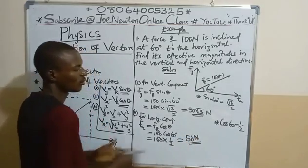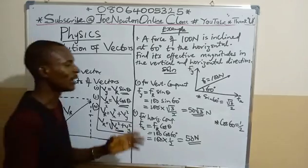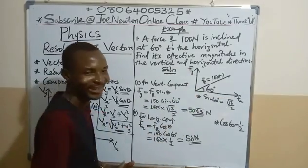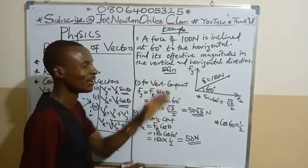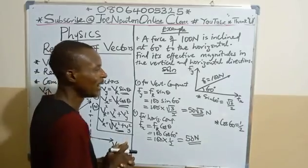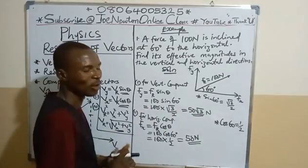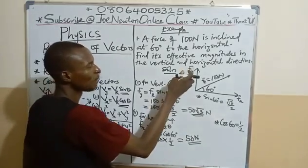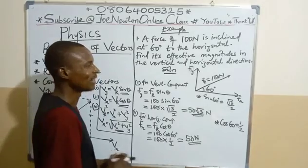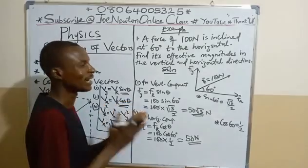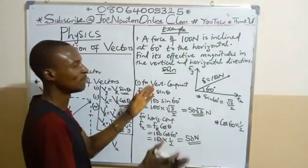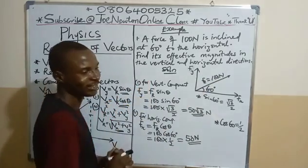The answer is simple. In vectors, we resolve the vectors — we don't divide or add them. One important thing to be mindful of: when you resolve correctly, you will observe that the value of each component will be less than the resultant. However, the algebraic sum of the components will be greater than the resultant. That is it — the value of each component is less than the resultant value, but the arithmetic sum will be greater than the resultant vector.